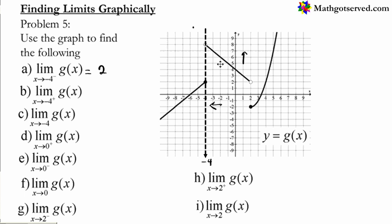What value is the graph approaching as it gets closer and closer to negative 4? As you go to the left, you are going up and up. As you are moving vertically and horizontally toward negative 4, vertically you are approaching the value 8. So the x value approaching is negative 4 and the function value approaching is 8.